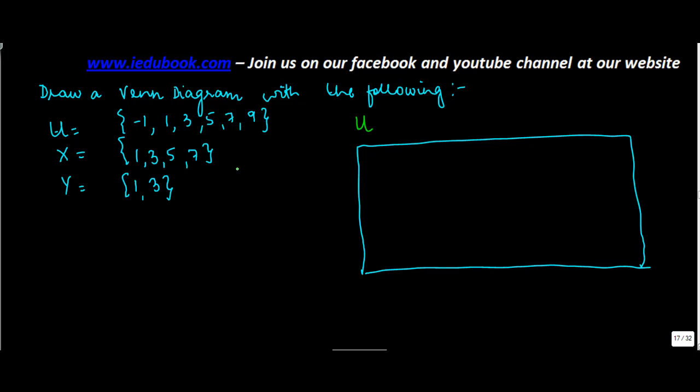Okay. Now I have something called X which lies as a circle over here. So I make a circle which I denote as X. X comprises of what? 1, 3, 5, and 7.